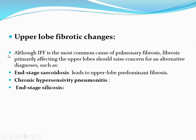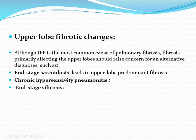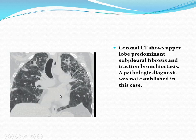Upper lobe fibrotic changes: although idiopathic pulmonary fibrosis is the most common cause of pulmonary fibrosis, fibrosis primarily affecting the upper lobes should raise concern for an alternative diagnosis such as end-stage sarcoidosis, chronic hypersensitivity pneumonitis, or end-stage silicosis. A coronal CT shows upper lobe predominant sub-pleural fibrosis and traction bronchiectasis. A pathological diagnosis was not established in this case.